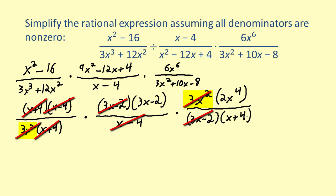The simplified form of the rational expression is 2x⁴(3x - 2)/(x + 4).